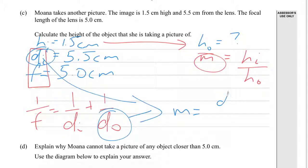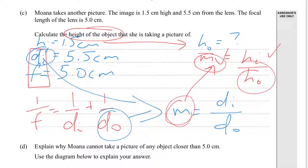Because di over do is the magnification. So then once we've got the magnification, we can put it into that formula. If we've got the magnification, we've got the height of the image, we can work out the height of the object, which is what the question is asking us to do.